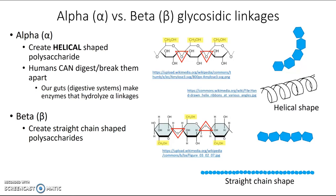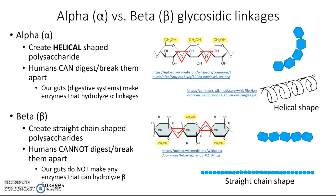The other thing you need to know about beta glycosidic linkages is that humans cannot digest them. Our digestive systems do not make any enzymes that can hydrolyze beta linkages. So if you eat a polysaccharide containing only beta linkages, you can't digest it at all — it goes straight through you and comes out the other end.